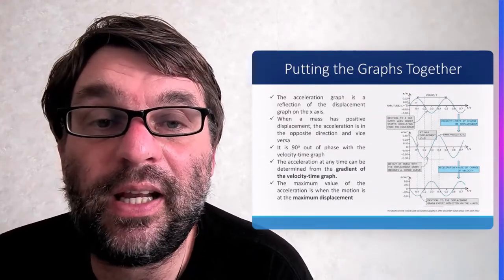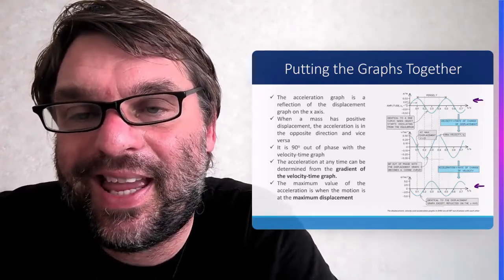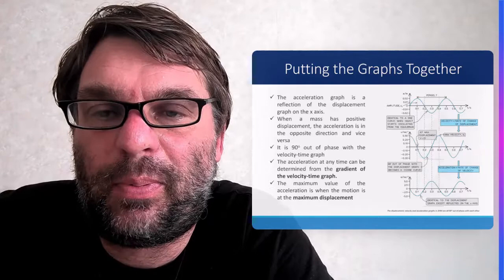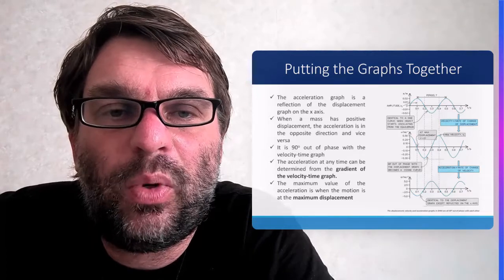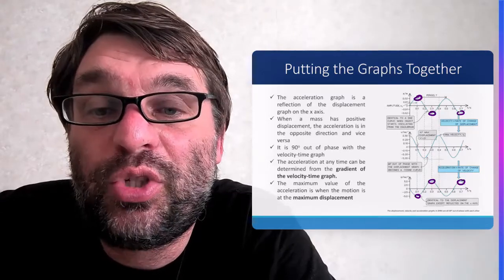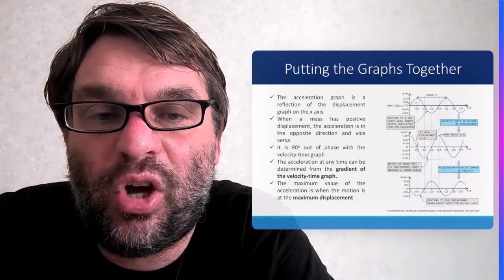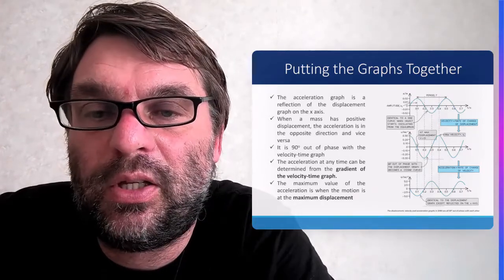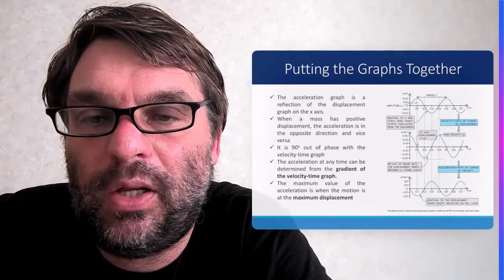The acceleration graph is essentially a reflection of the displacement-time graph in the x-axis — a 180-degree reflection, out of phase. So the displacement-time graph is out of phase with the acceleration-time graph by 180 degrees. This means that when a mass has a positive displacement, the acceleration is negative — which is exactly what we need for SHM. The acceleration is also 90 degrees out of phase with the velocity-time graph, so maximum acceleration occurs at maximum displacement and is zero when displacement is zero.